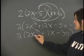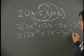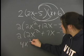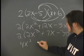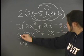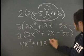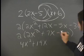is 2 times everything within the brackets. So we get 4x squared from 2 times 2x squared plus 2 times 7x is 14x and then 2 times